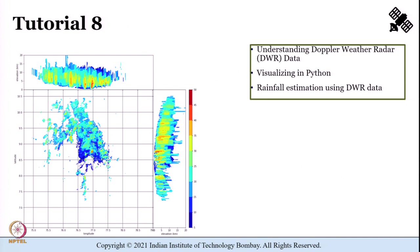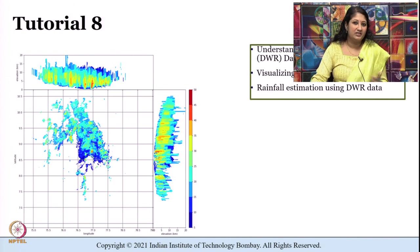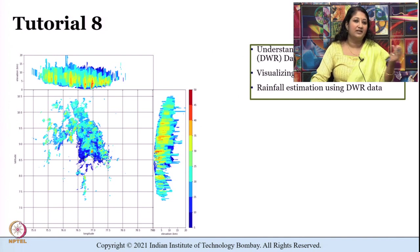Doppler weather radars are largely used for monitoring the occurrence and movement of rainfall patterns. Through Tutorial 8 we shall learn to visualize and understand the weather patterns captured by the Doppler weather radar instrument. For this we shall use freely accessible Level 2 data from NEXRAD — Next Generation Weather Radar archives. We shall cover details from downloading data from the archives, coordinate conversions, interpretation of reflectivity and radial velocity data, and finally moving on to rainfall estimation using reflectivity data.